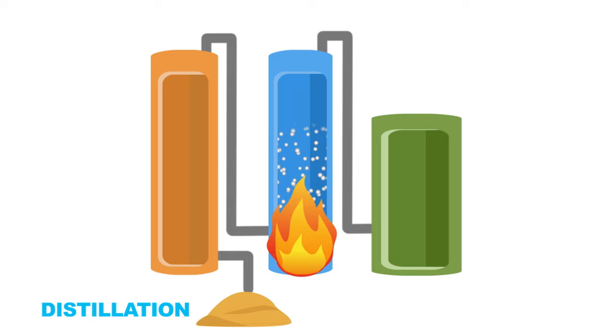More heat is applied in the second column and the ethanol again rises to the top and is now further concentrated to 95 percent ethanol. These ethanol vapors then exit the column and pass through a condenser, which turns the vapor back to a liquid.